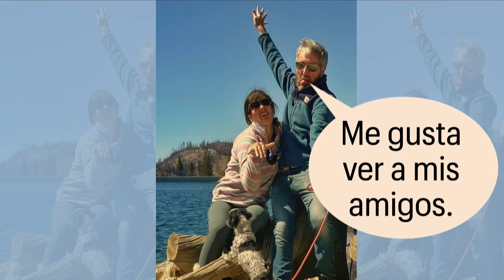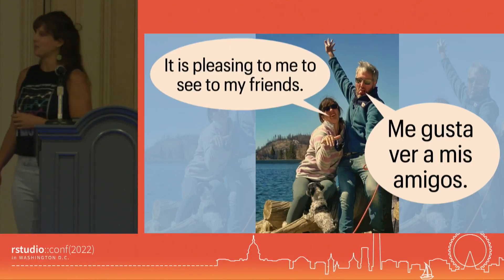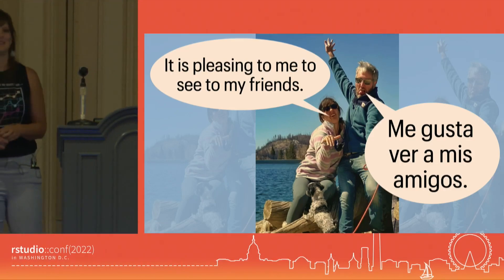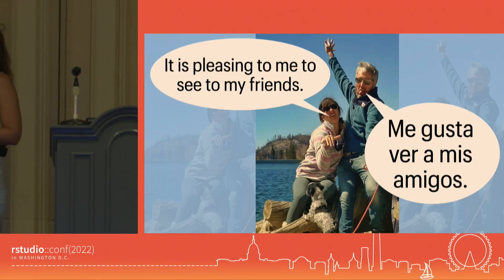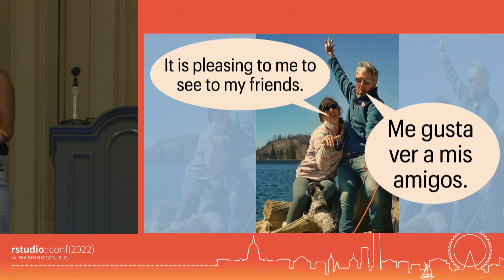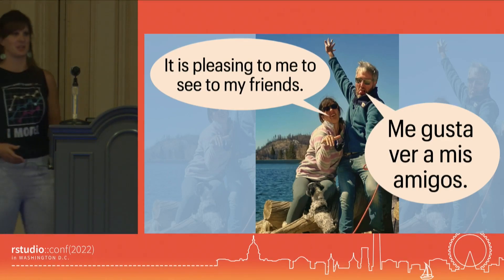Me gusta ver a mis amigos. Sorry for the pronunciation. That 'a' — ver a mis amigos — was the point of the episode. It's a weird construction for what they're trying to say, which is: I like to see my friends. But if you were to translate word for word literally to English, we would be saying, 'it is pleasing to me to see to my friends,' which is not a thing we say in English. This got me thinking about the idea of a one-to-one direct translation and how that's not really how languages actually work.